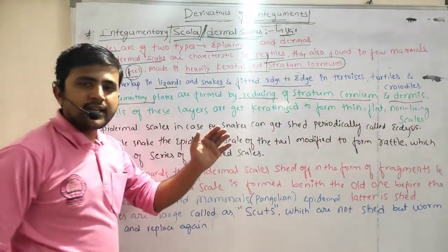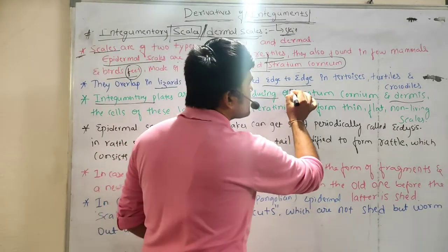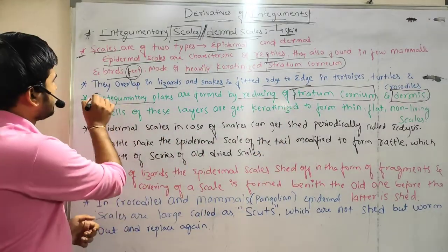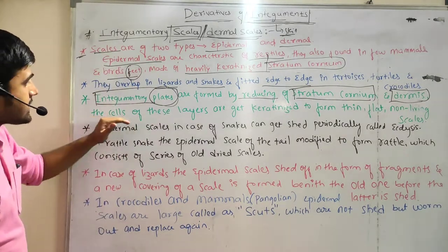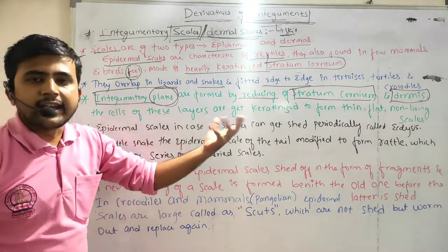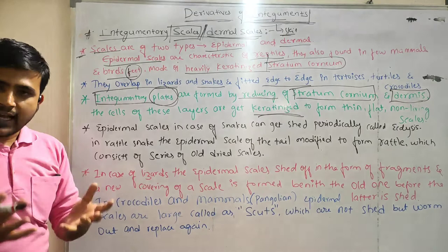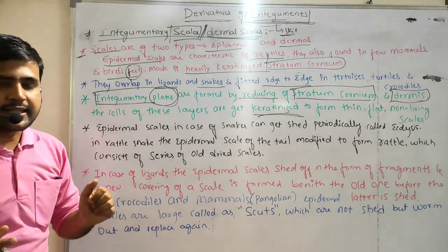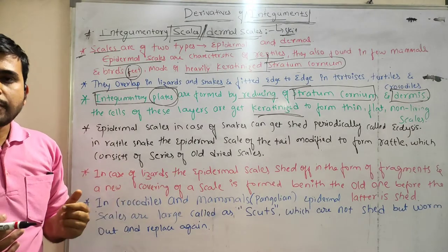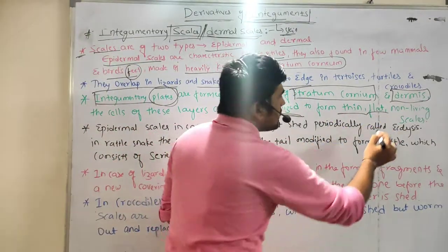Integumentary plates are formed by the decreasing of stratum corneum — which is one of the major layers of the epidermis — and the dermis, which is present just below the epidermis. The reduction of these two layers, stratum corneum and dermis, forms the integumentary plates. The cells of these layers are keratinized — meaning the cells lose their protoplasm and become flat — to form thin, flat, non-living scales.